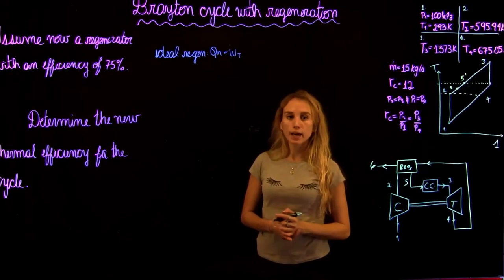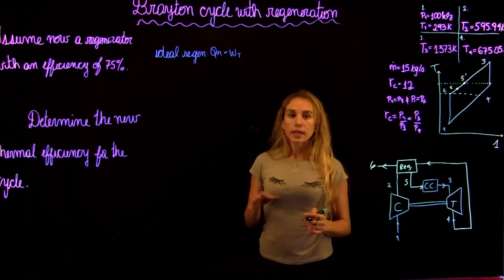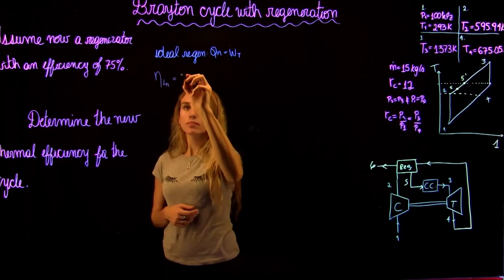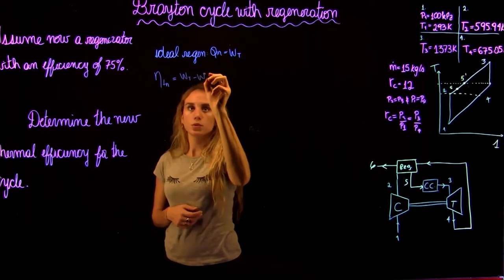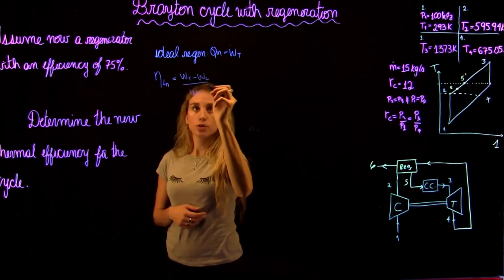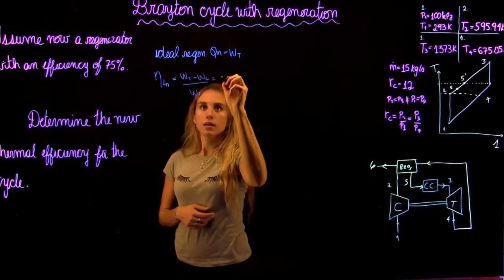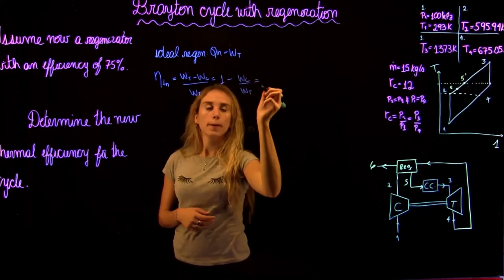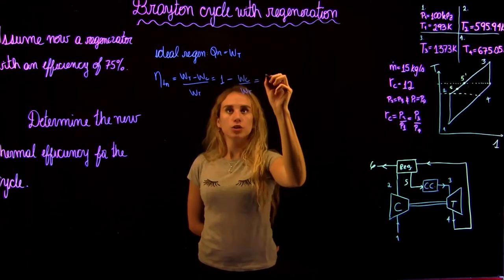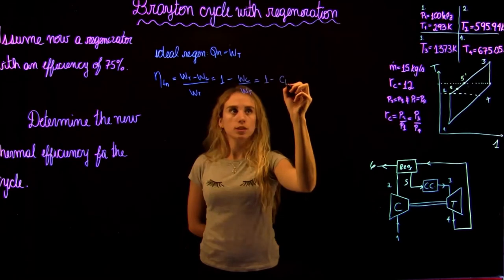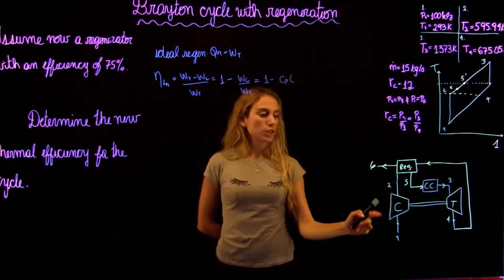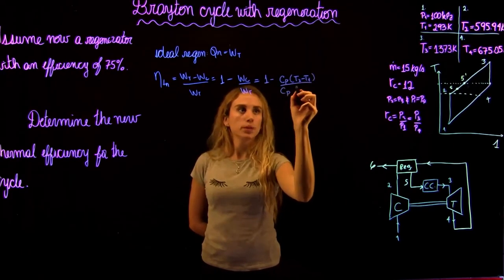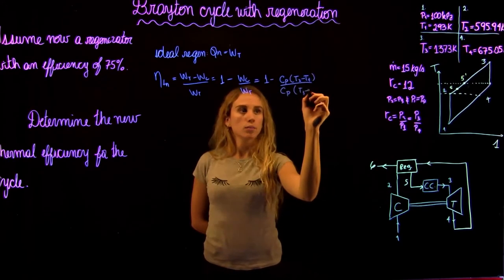In an ideal regenerator, Q_in equals the turbine work, so we can write thermal efficiency as: η = (W_turbine − W_compressor) / W_turbine = 1 − W_compressor / W_turbine. Writing out the equations, this becomes 1 − [Cp(T2 − T1)] / [Cp(T3 − T4)].